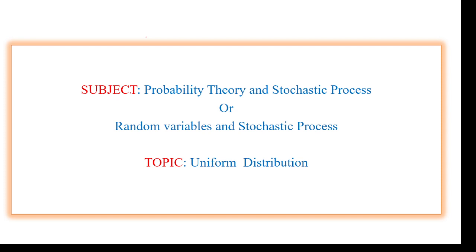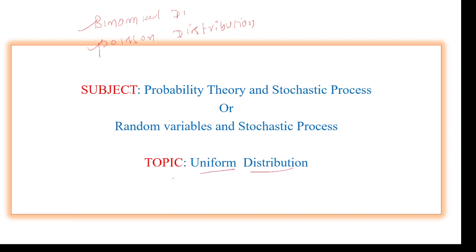I am going to explain about uniform distribution. Uniform distribution is used to find probability for a given random variable. If the data is uniformly distributed, depending on the condition we can use binomial distribution, or Poisson distribution. Poisson is also used to find probability. So depending on the conditions, we can go with either binomial, Poisson, or uniform distribution. Like binomial and Poisson, uniform distribution is also used to find the probability.